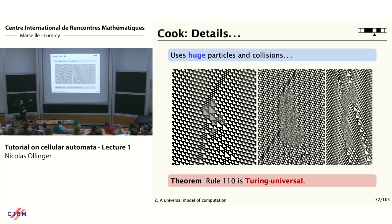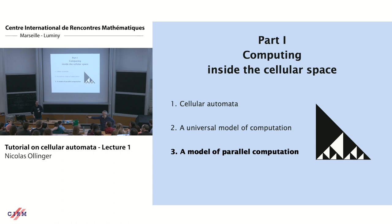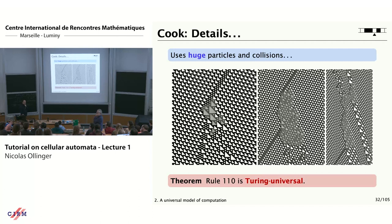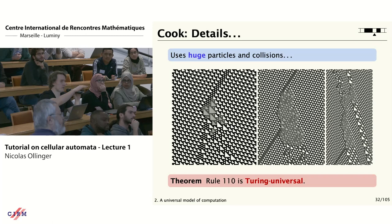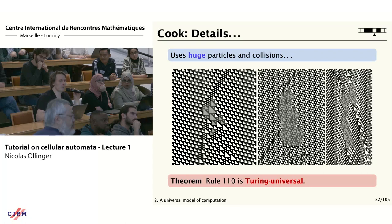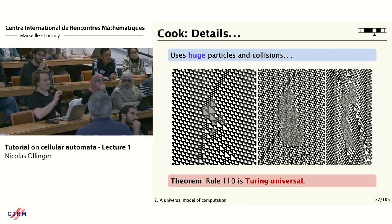There's a bit of a problem if there is no definition but we write 'Theorem.' In defense of Cook, while there may not be a good definition of Turing-universal in his paper, there are precise undecidable statements stated there — for example, whether a particular pattern eventually appears starting from an ultimately periodic configuration is stated to be undecidable. So he does state precise mathematical facts, unfortunately not in a theorem block.